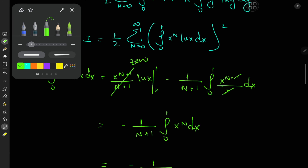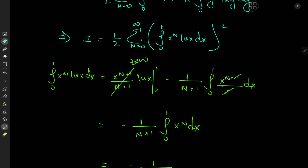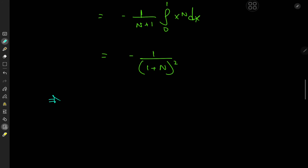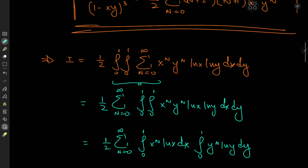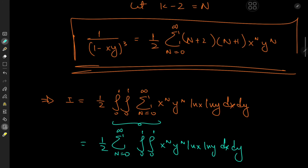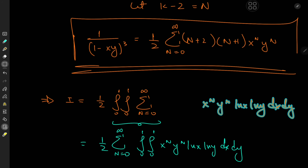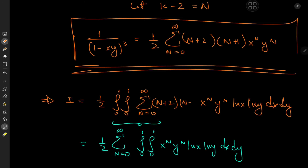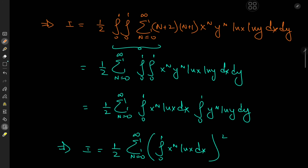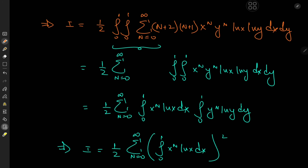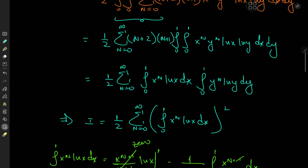Turning back to the evaluation of the target integral, we need to square this result and sum over n from 0 to infinity. It seems I forgot a few things — the two most important bits, the factors (n+2)(n+1). After correcting: these terms are independent of x and y so we can take them outside the integral operators. We then have n plus 2 and n plus 1 appearing in the numerator. It's not exactly a Maths 505 video without some bloopers.